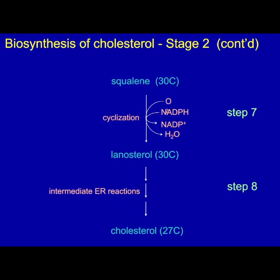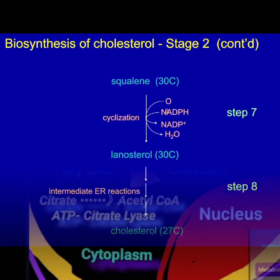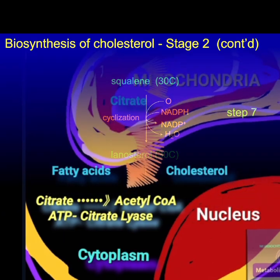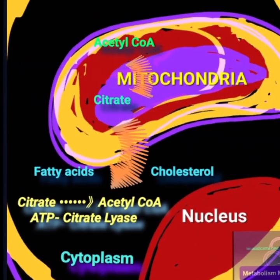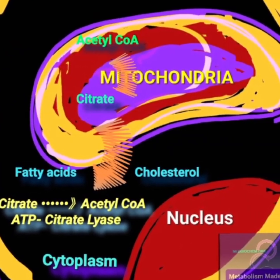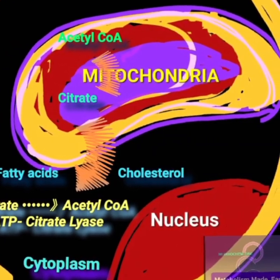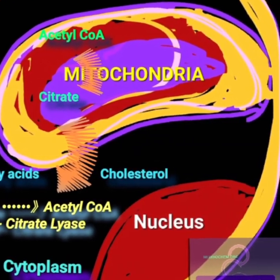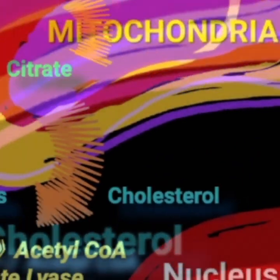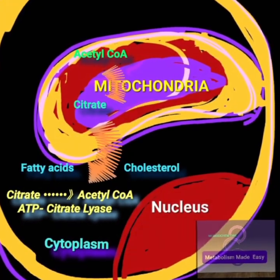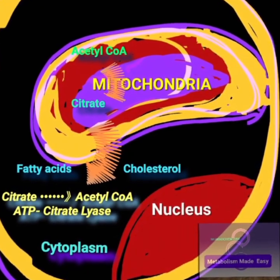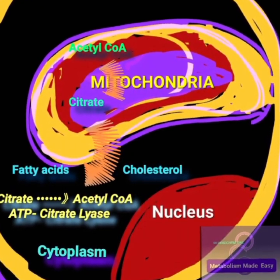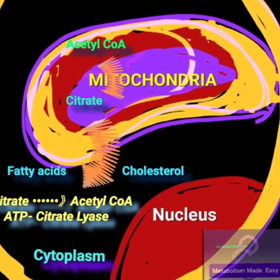It is noteworthy that acetyl-CoA needed for cholesterol biosynthesis is produced by hydrolysis of citrate by ATP citrate lyase in the cytoplasm.